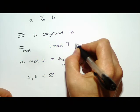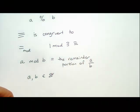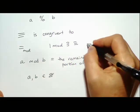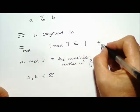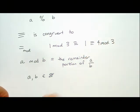So 1 mod 3 — if I divide 1 by 3, the remainder is 1, so 1 mod 3 equals 1. How about 4 mod 3? It's also 1. That's what we use the triple equals for. 'Equals' is reserved for things that are actually equal, but 'congruent to' means they reduce down to the same thing under the same mod.